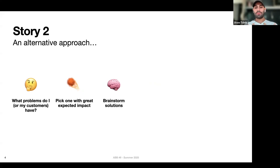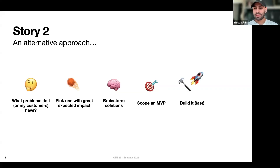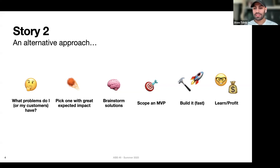Once you've picked a problem, now you're in a position to brainstorm solutions. Once you have those solution ideas, you can pick one and scope out a minimum viable product — the most simple and basic version of this solution you can build quickly that will give you some value. Then build it as fast as possible using AI tools. At the end of it, you'll either profit, or at the very least, you'll learn something that will allow you to profit in a future solution.